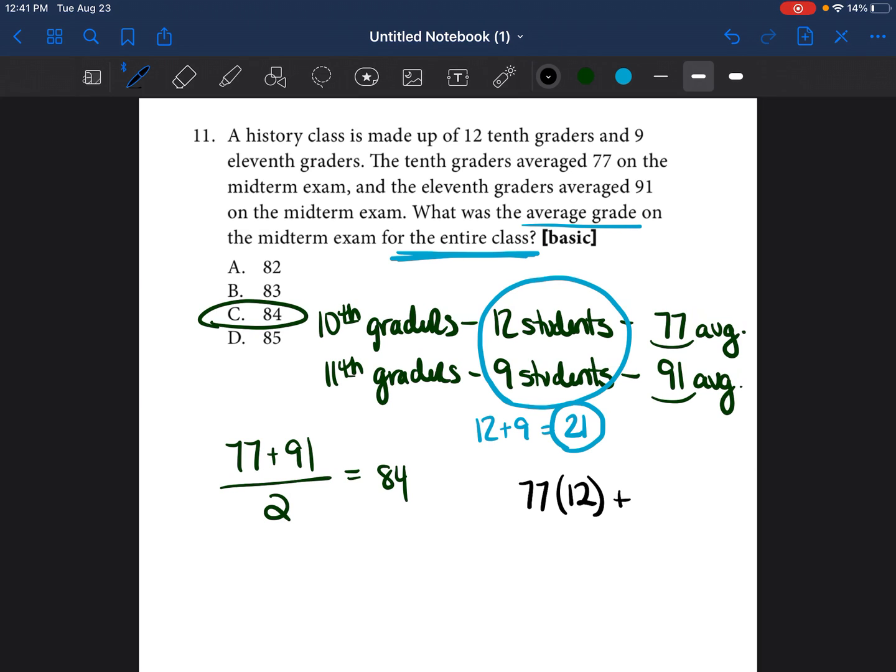And then we're going to add it to the grades that the 9 students got in eleventh grade. So instead of saying 91 plus 91 plus 91, 9 times, we're going to do 91 times 9 students. So that's going to give us a total of all the grades that all the students got. When we're trying to find average, we add up all the grades together divided by the number of students. And we found that the total number of students is 21.